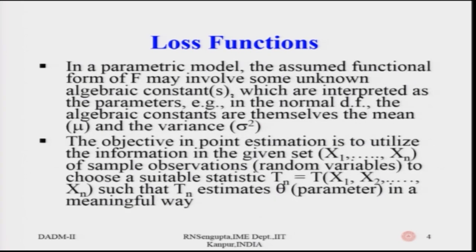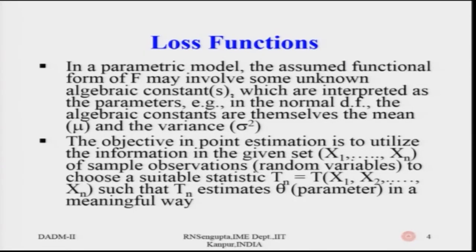In a parametric model, the assumed functional form of f may involve unknown algebraic constants interpreted as parameters. For example, in the normal distribution the parameters are mean mu and standard deviation sigma. In the exponential distribution you have a and theta; in the Poisson distribution, theta; and in the binomial distribution, n and p. These parameters from the population are unknown when you pick up observations.